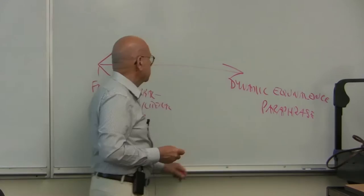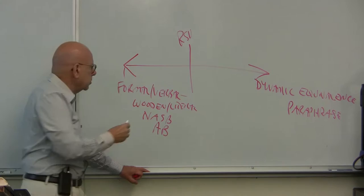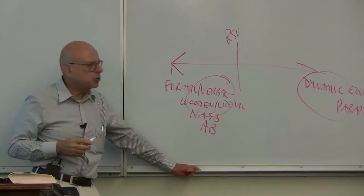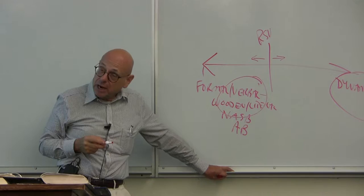The value of the RSV is that it seeks to chart a mediating position between these two extremes. It is not committed either to verbal equivalents or to dynamic equivalents, but makes translation decisions based on the translation demands of individual passages. So it's more eclectic, and we might say more inductive in terms of its application of translation theory.